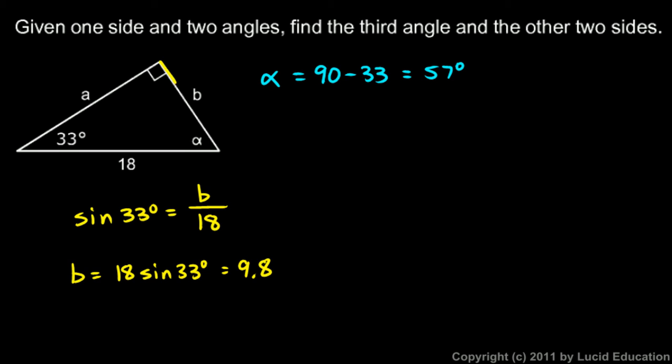Now once you know side B and the hypotenuse, you can find side A with the Pythagorean theorem, but it's actually easier to use trigonometry. I'm going to use trigonometry to find side A also. Look at the 33 degree angle. A is adjacent to the 33 degree angle, and this is the hypotenuse. When I have the adjacent side and the hypotenuse, I think cosine. So the cosine of 33 degrees is adjacent, that's A, over the hypotenuse, which is 18. Solving that for A, A is 18 times the cosine of 33 degrees, and that comes out to be 15.